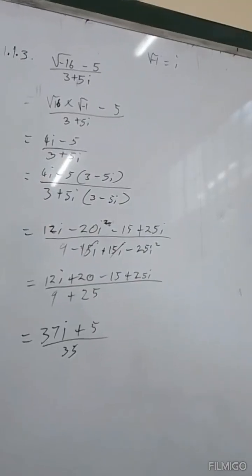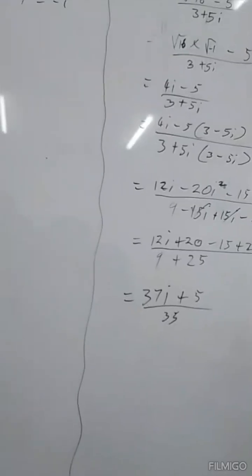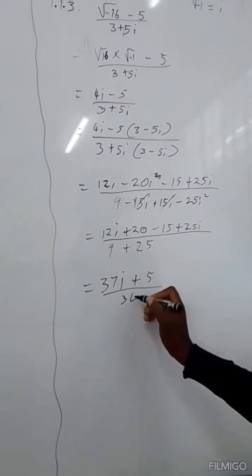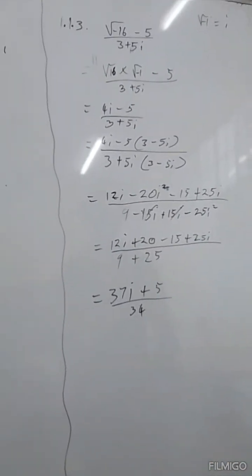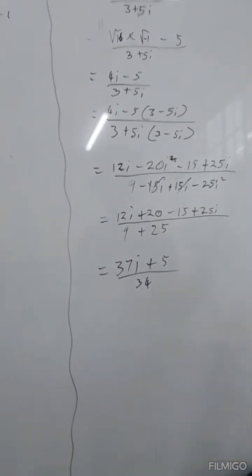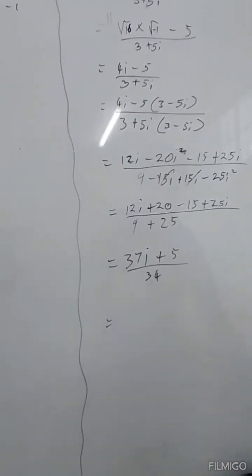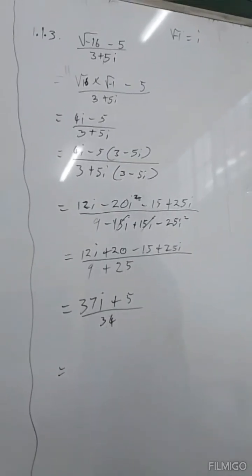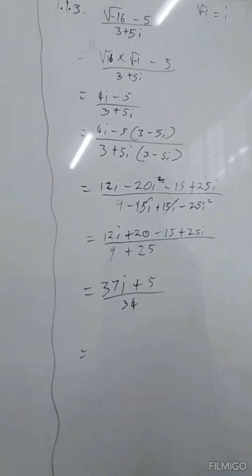Therefore, I made a correction — it is 34. The final answer is (5 plus 37i) divided by 34. You can simplify it further by dividing each part: 5 over 34 plus 37 over 34 times i.